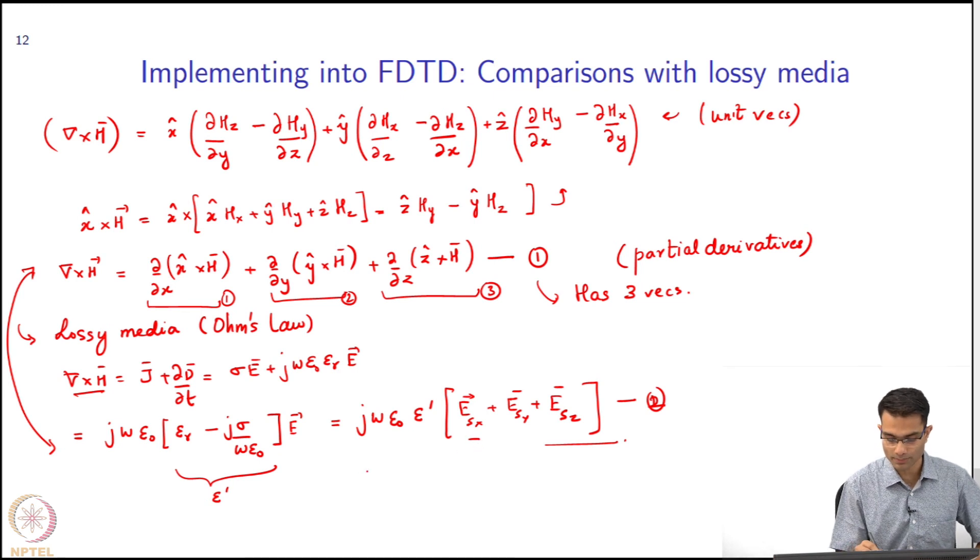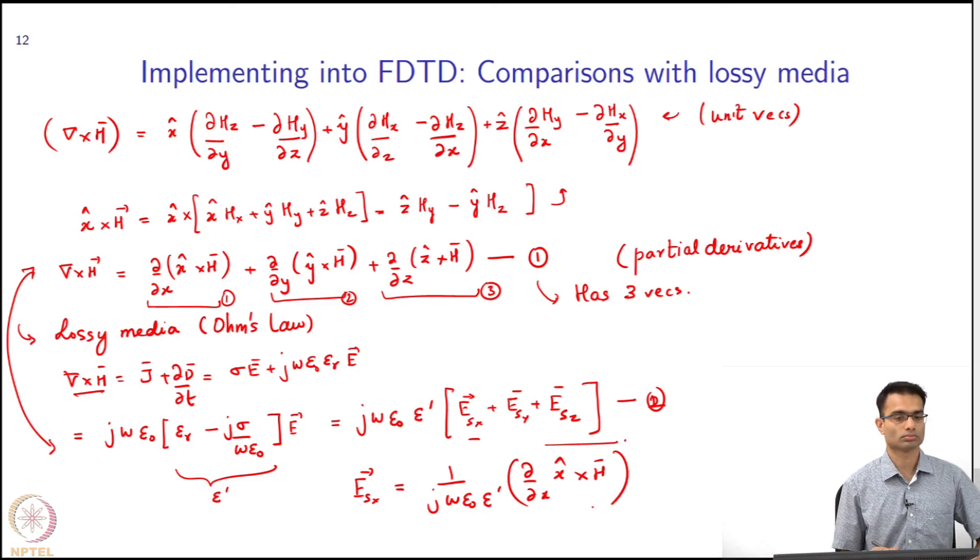So ES_x, for example, what is the definition? This is a new definition I have introduced. This will be equal to 1/(jωε_0ε') by definition. This is my definition. Can I do that?